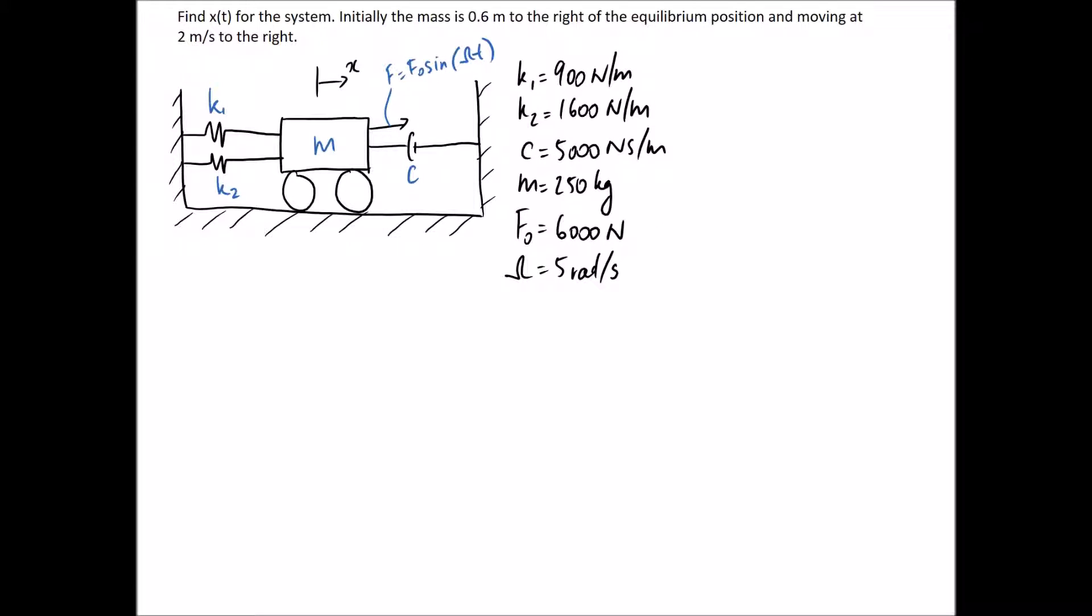Alright, so we're asked to find x of t for the system, and we're told initially the mass is 0.6 meters to the right of the equilibrium position and moving at 2 meters per second to the right as well.